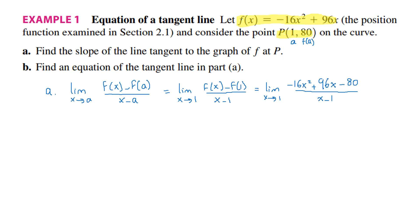If you factorize the numerator, we have the limit as x goes to 1. I am going to take minus 16 as a common factor outside from all the monomials. Then we have x squared minus 96 divided by 16, which equals 6x. I switched the signs because I took a negative GCF. And plus 80 divided by 16 is 5, divided by x minus 1.